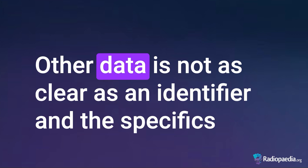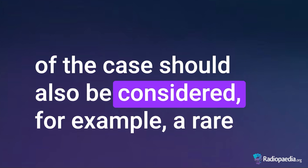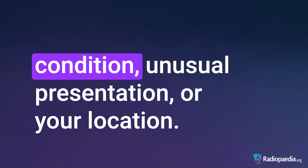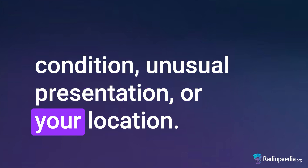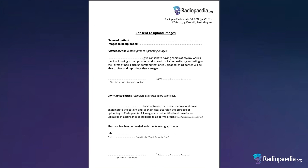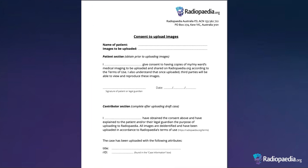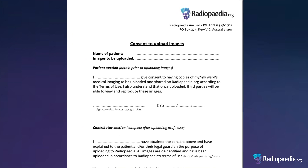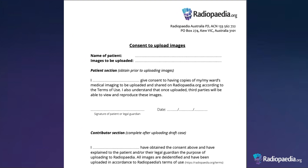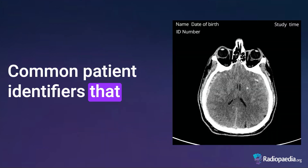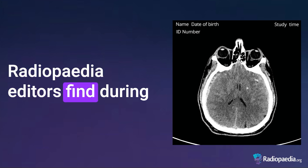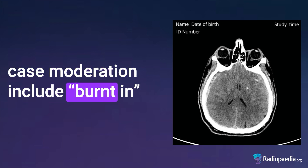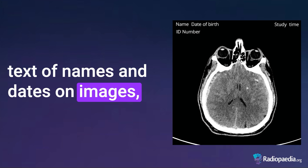Other data is not as clear an identifier, and the specifics of the case should also be considered — for example, a rare condition, unusual presentation, or your location. If you are unsure, it is best to gain consent from the patient. A consent form is available to download from the patient confidentiality article and can be emailed to Radiopaedia. Common patient identifiers that Radiopaedia editors find during case moderation include burnt-in text of names and dates on images.